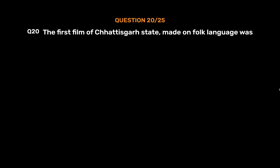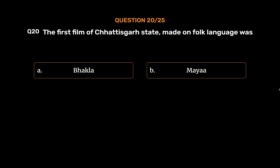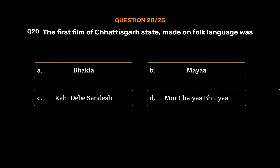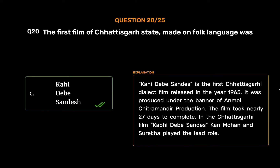Question No. 20: The first film of Chhattisgarh state made in folk language was — Option A: Bhakla. Option B: Maya. Option C: Kahin Debe Sandesh. Option D: Morchaiya Bhuia. The correct answer is Option C: Kahin Debe Sandesh. Kahin Debe Sandesh is the first Chhattisgarhi dialect film, released in 1965. It was produced under the banner of Anmol Chitramandir Productions. The film took nearly 27 days to complete, with Khan Mohan and Surekha playing the lead roles.